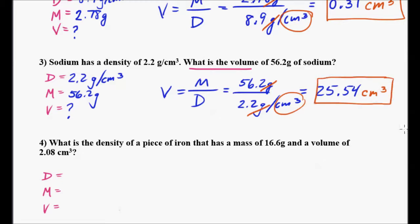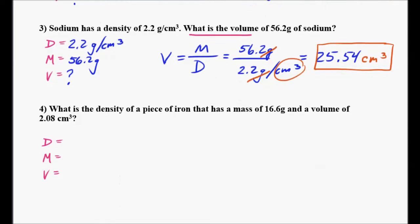Let's move on to the next one. This time it says what is the density — so right away I see I'm looking for something different. What is the density of a piece of iron that has a mass of 16.6 grams and a volume of 2.08 cubic centimeters? I'm going to put a question mark at density, a mass of 16.6 grams, and a volume of 2.08 cubic centimeters.